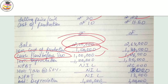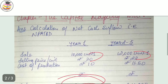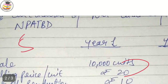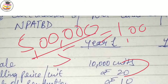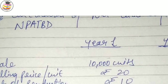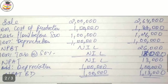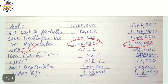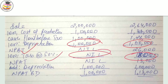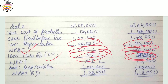From the cash inflow before tax, first deduct depreciation. Depreciation will be 1 lakh — because we are using the straight line method, the machine cost is 5 lakh and the life is 5 years, so depreciation per year = 1 lakh. After deducting depreciation, you get net profit before tax. Then deduct tax at 50 percent. For year 1 the amount is nil; for year 2 to 5 the profit before tax is 26,000, so tax is 13,000, giving net profit after tax.